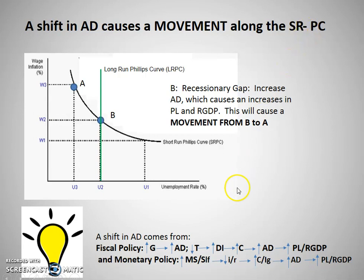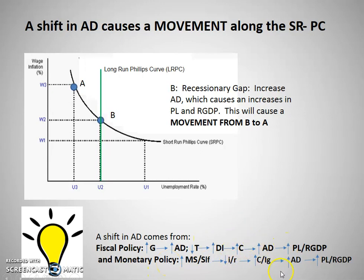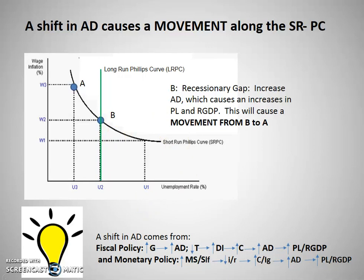What causes a shift in AD? When the government steps in through fiscal or monetary policy, they're affecting the aggregate demand curve. Through fiscal policy it's government spending and taxation, and through monetary policy there are three tools. If we're causing an increase in AD, that would be expansionary monetary policy — buying bonds, decreasing the discount rate, or decreasing the reserve requirement. If we're doing expansionary policy and we're at U2, it would be a movement from B to A because the price level goes up and real GDP goes up, meaning unemployment goes down.